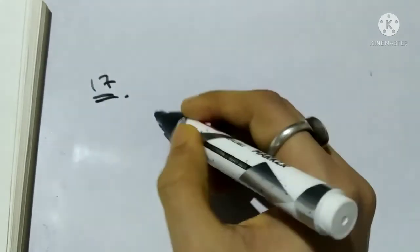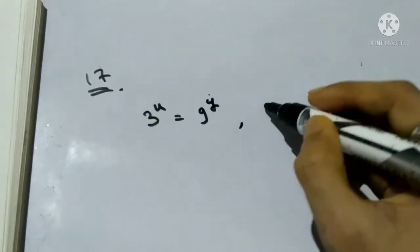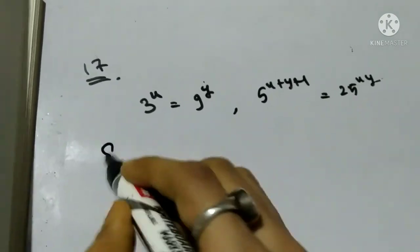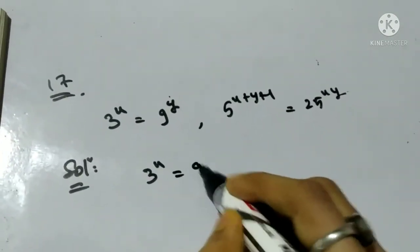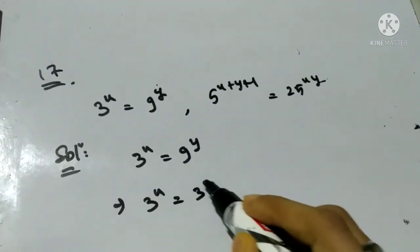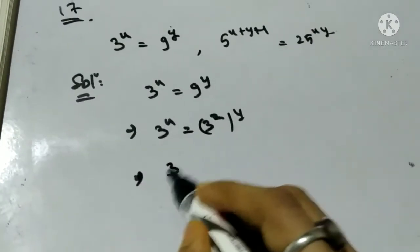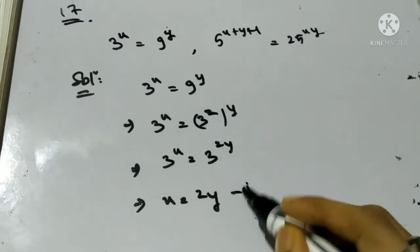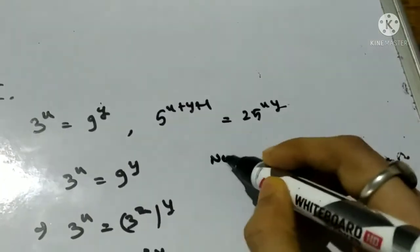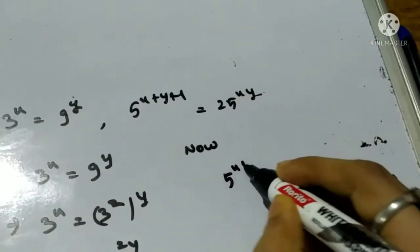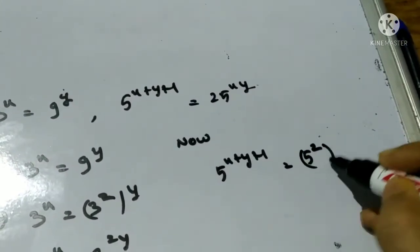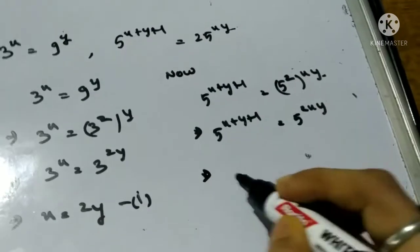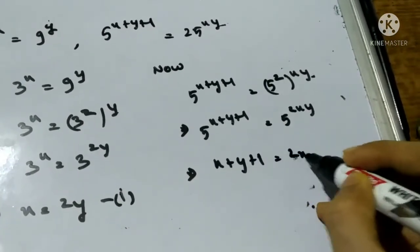Question number 17: 3^x equals 9^y and 5^(x plus y plus 1) equals 25^(xy). From the first equation: 3^x equals (3²)^y equals 3^(2y), so x equals 2y. This is equation 1. From the second equation: 5^(x plus y plus 1) equals (5²)^(xy) equals 5^(2xy), so x plus y plus 1 equals 2xy.